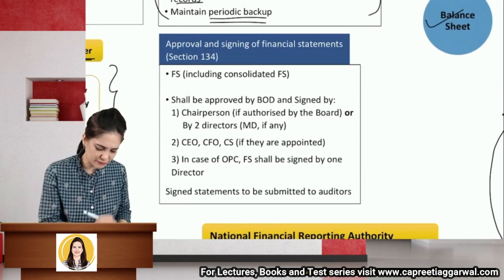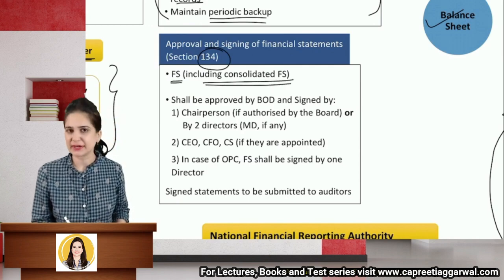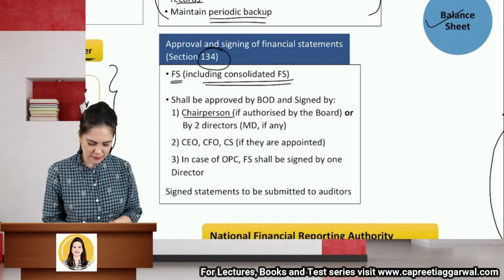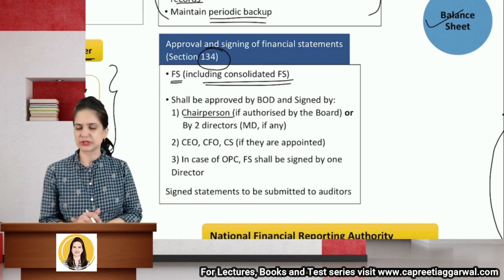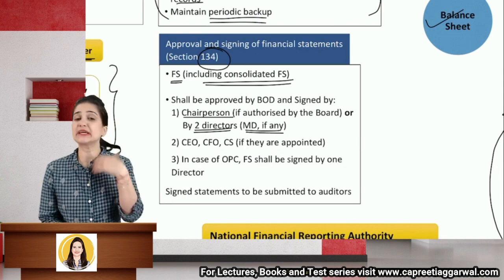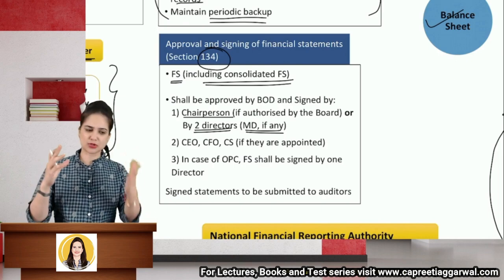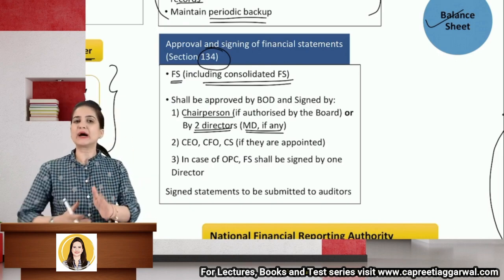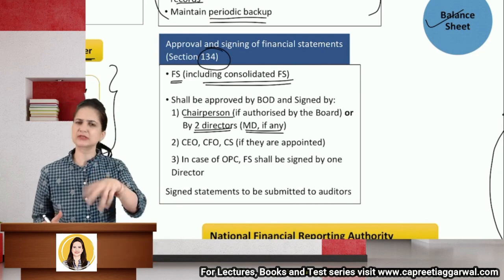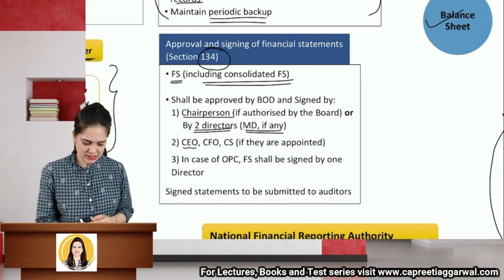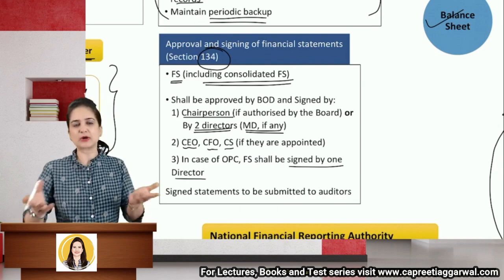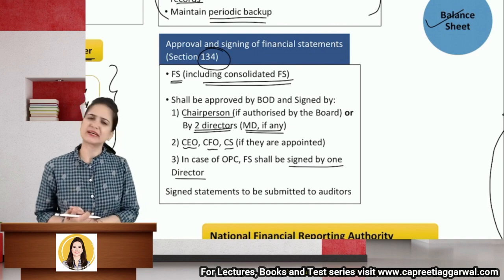Under Section 134, financial statements including consolidated financial statements shall first be approved by the board and signed on behalf of the board by the chairperson, if authorized by the board. If there is no chairperson or he is not so authorized, then by two directors, one of whom shall be the managing director if the company has one. It shall also be signed by the CEO, CFO, and company secretary if appointed. In case of OPC, one director's signature is sufficient.